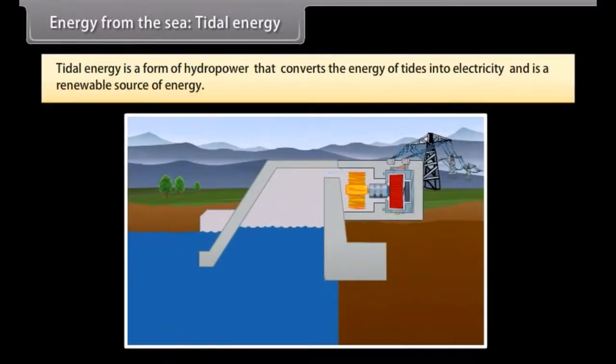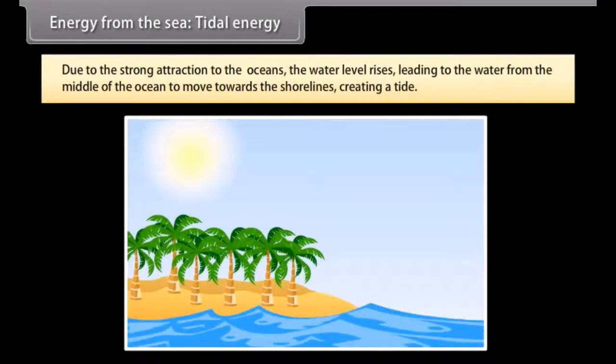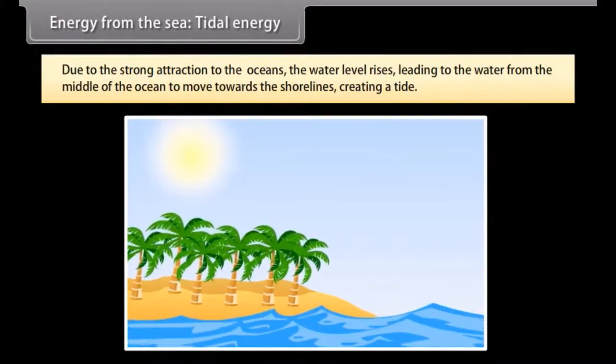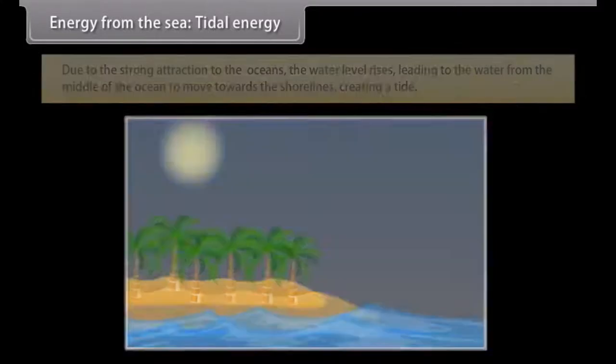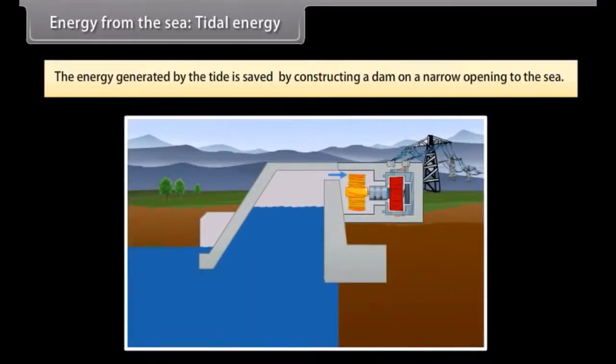Energy from the sea: Tidal energy. Tidal energy is a form of hydropower that converts the energy of tides into electricity. This is a renewable source of energy. Tidal energy is extracted from oceanic tides. Tidal forces are periodic variations in gravitational attraction exerted by the moon. This force creates motions or currents in the oceans. Due to the strong attraction to the oceans, the water level rises, leading water from the middle of the ocean to move towards the shorelines, creating a tide. This is an unfailing occurrence due to the consistent pattern of the moon's orbit around the earth. The energy generated by the tide is saved by constructing a dam on a narrow opening to the sea. A turbine is then fixed at the opening of the dam that converts this tidal energy to electricity.